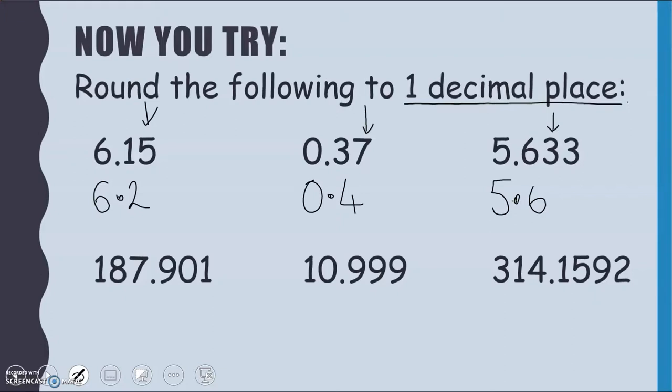187.901. Well, my second decimal place is the 0. That tells us to stay the same. So it's just 187.9.